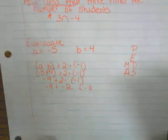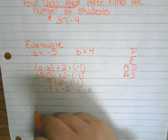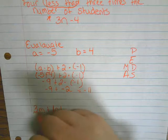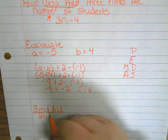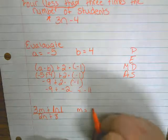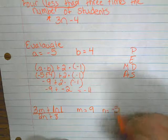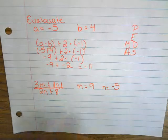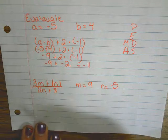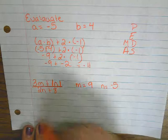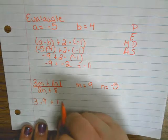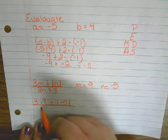What about three M plus the absolute value of N over two N plus eight. And M is equal to nine, N is equal to negative five. So when I have a number and a letter right next to each other, what does that mean? Multiply. So I'm taking three times nine plus the absolute value of negative five over two times negative five plus eight.